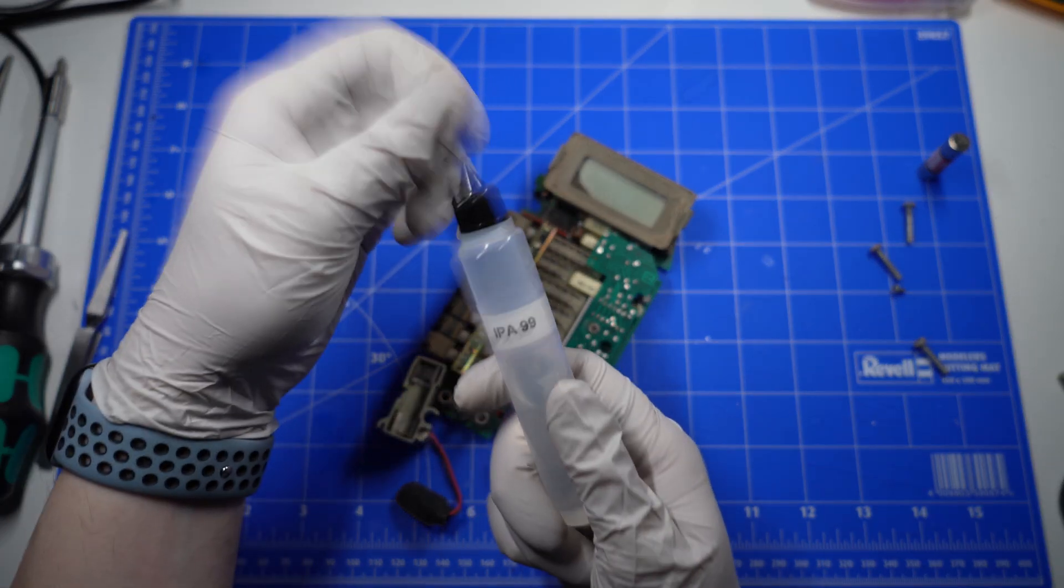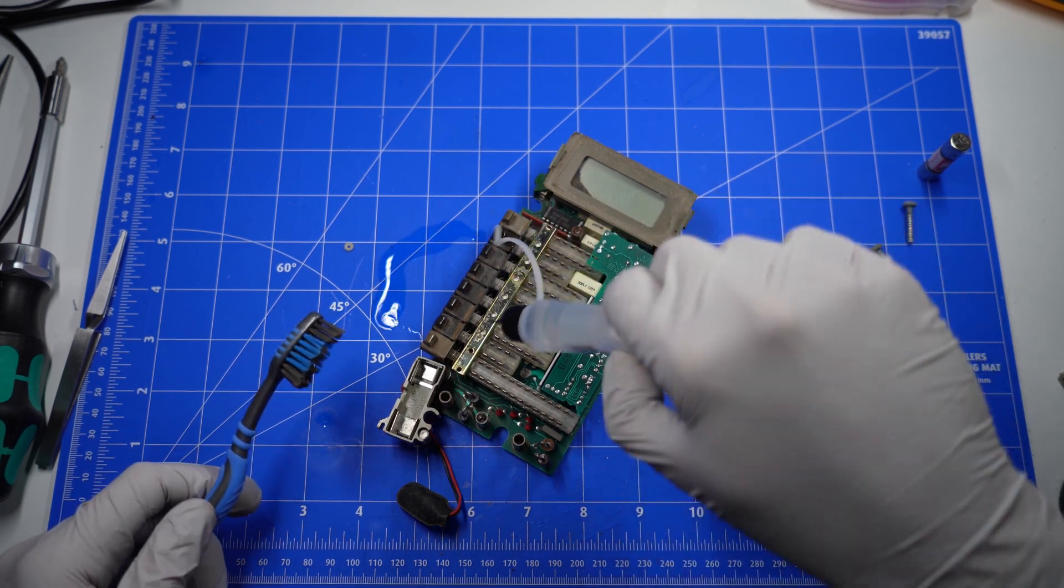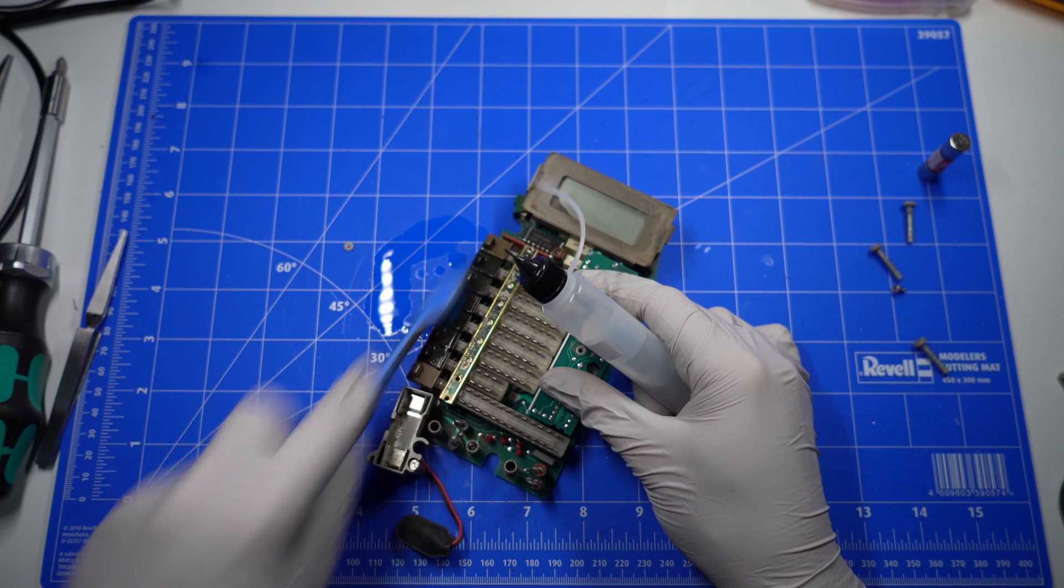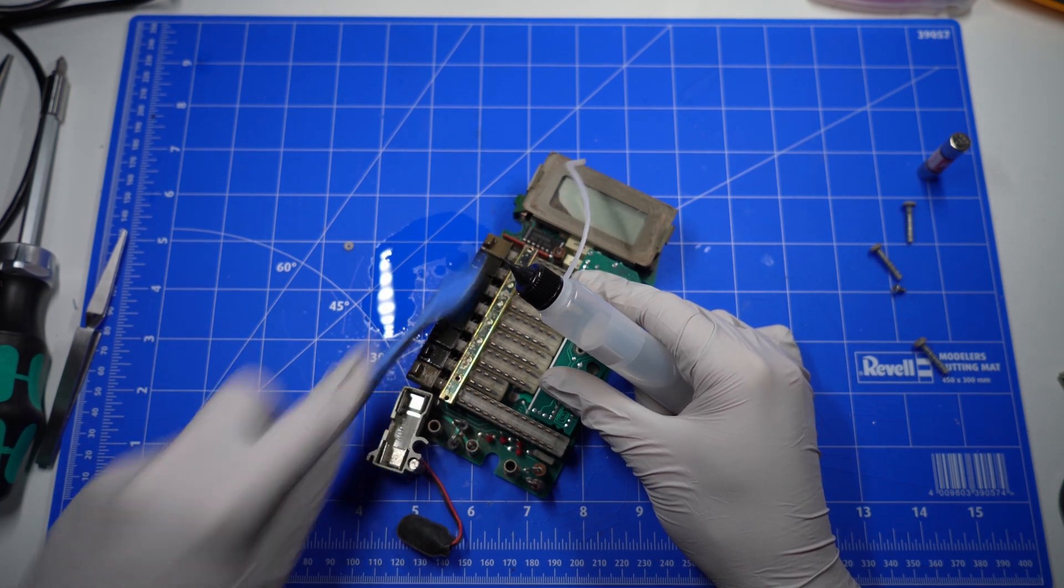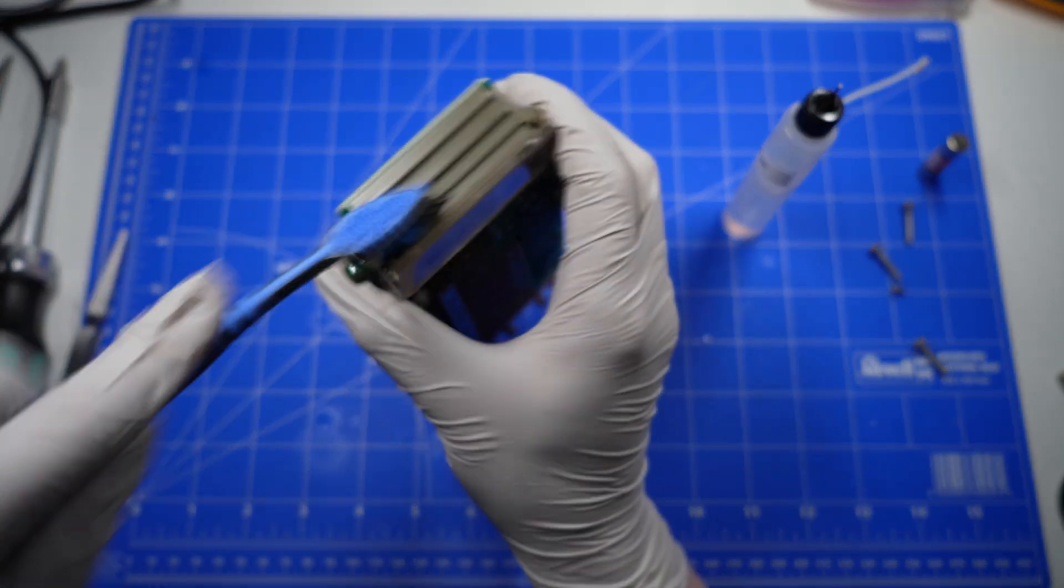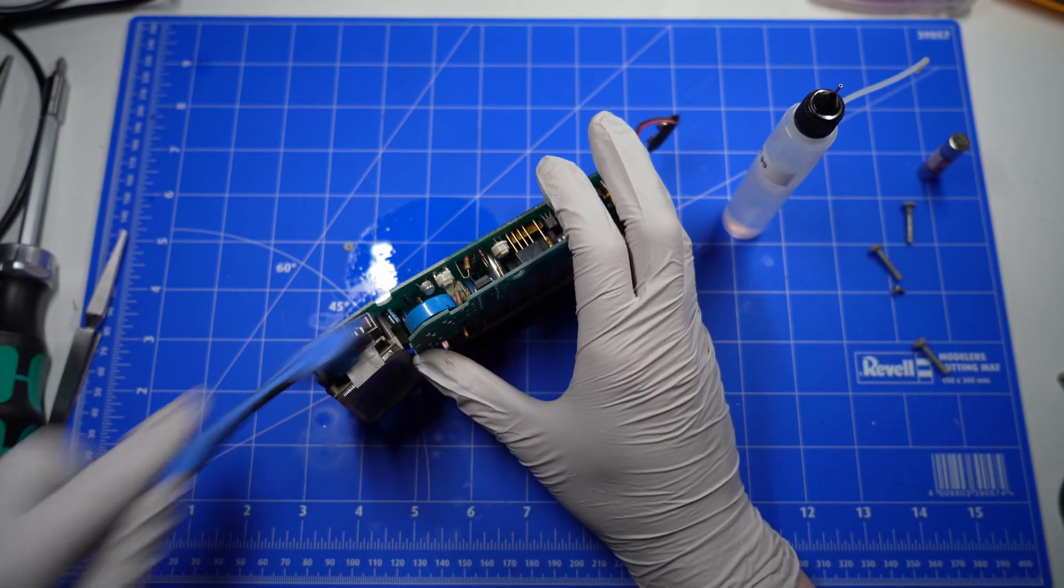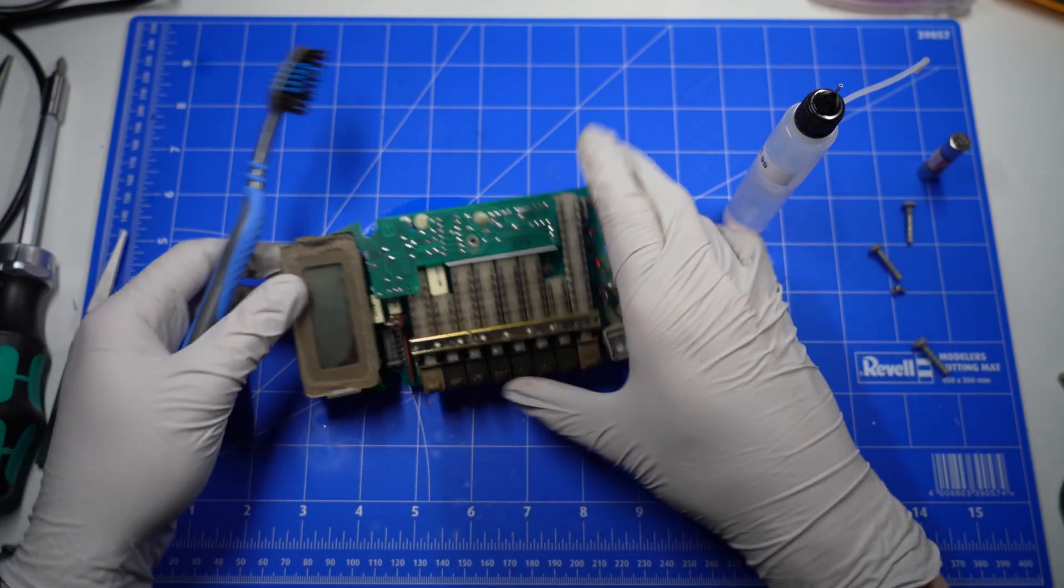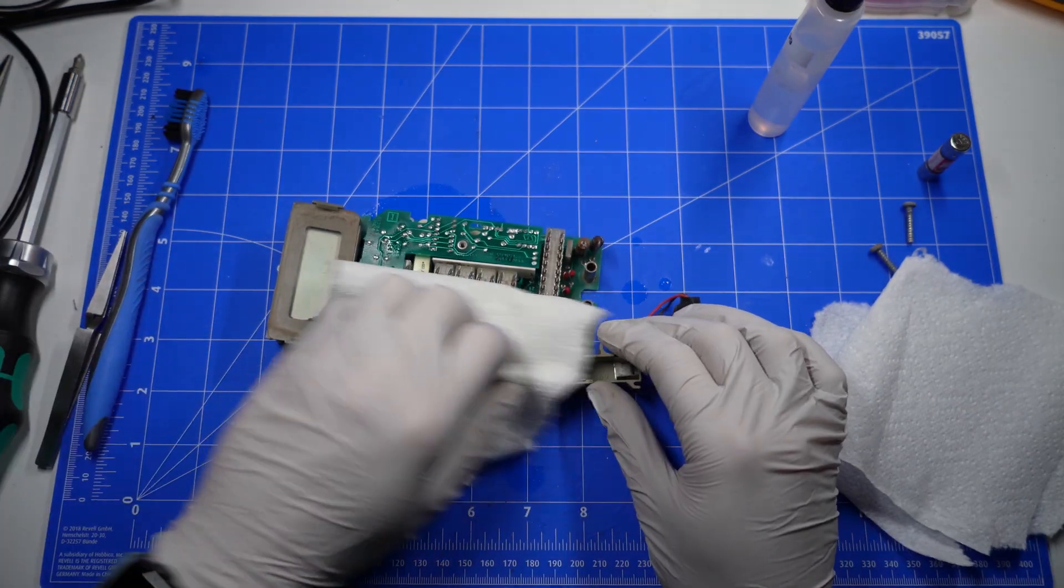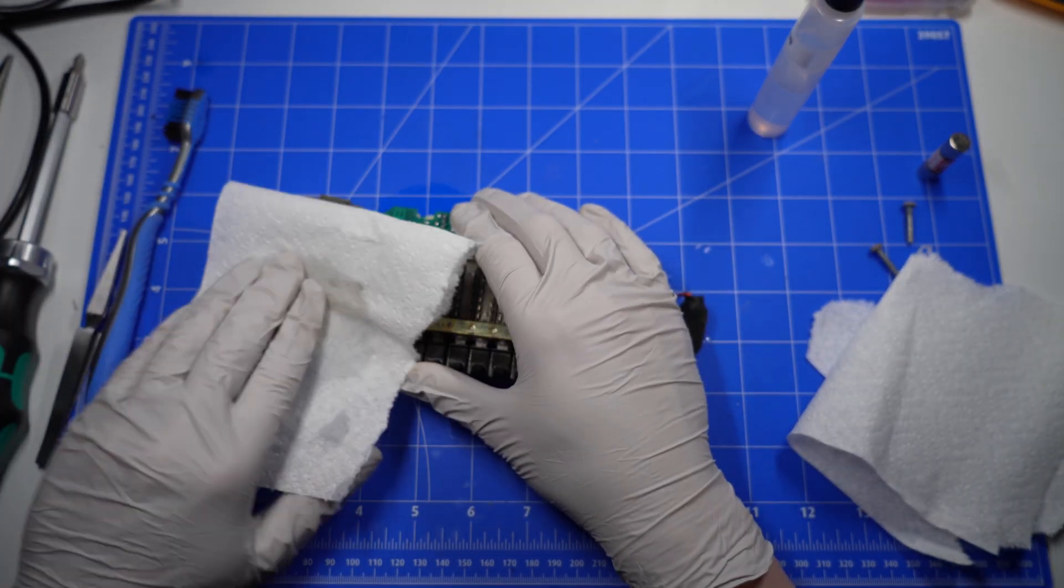So I'm just grabbing some 99% isopropyl alcohol and my toothbrush. I'm just going to scrub everything down, making sure to get all the sides and the top. I won't bother separating the PCB at this stage. I will put it back together and see if it works first.